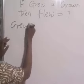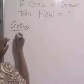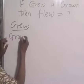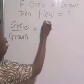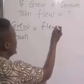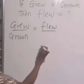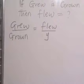Grew over grown is equal to flew over the past participle. We don't know, so we can represent it with y. Then cross-multiply.